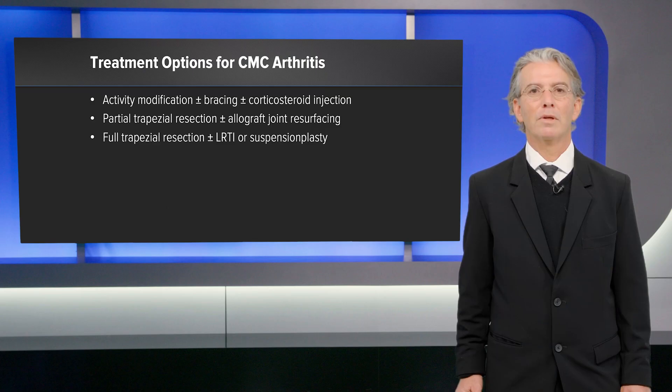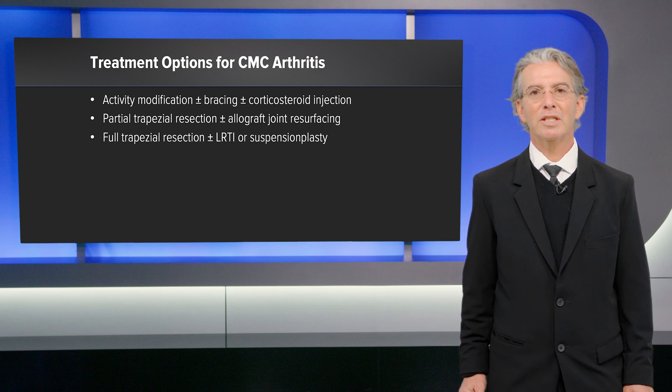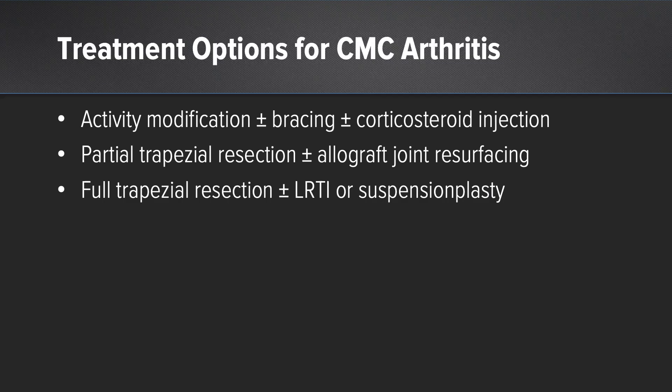Treatment options for CMC arthritis traditionally have included activity modification, splinting, and corticosteroid injections. Operative treatments include trapezial resection with allograft or joint resurfacing, and full trapezial resection with LRTI or suspensionplasty.